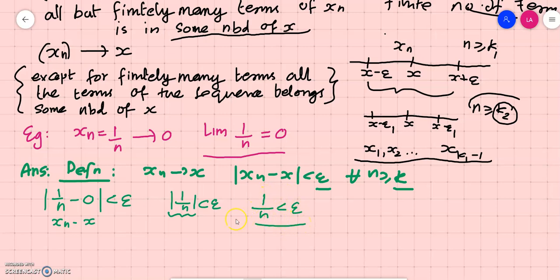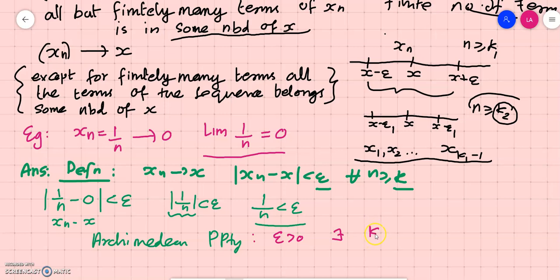This is trivially true by the Archimedean property. By the Archimedean property we have the result that for every epsilon greater than zero, there exists a natural number k such that 1/k is less than epsilon. If 1/k is less than epsilon, then 1/(k+1), which is less than 1/k, should always be less than epsilon. Similarly, 1/(k+2), which is less than 1/(k+1), should be less than epsilon.